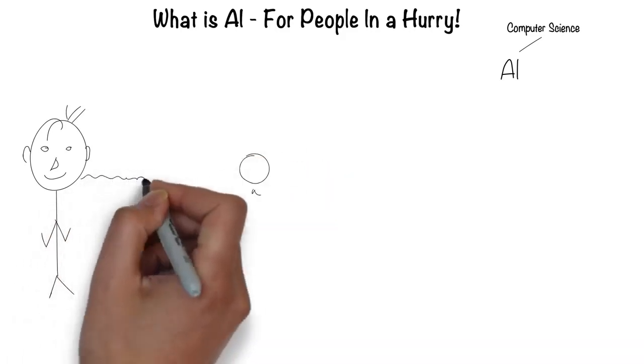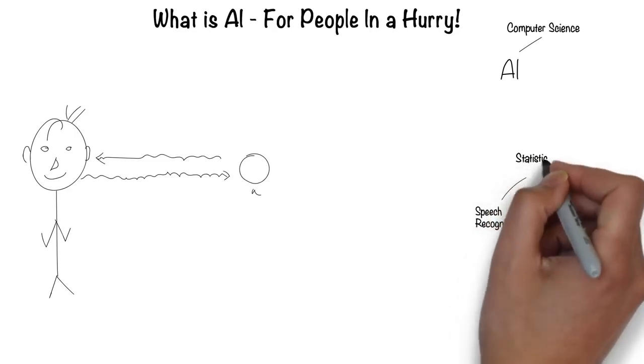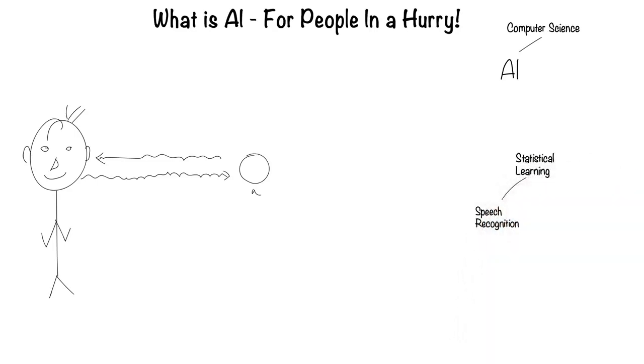Humans can speak and listen to communicate through language. This is the field of speech recognition. Much of speech recognition is statistically based, hence it's called statistical learning.